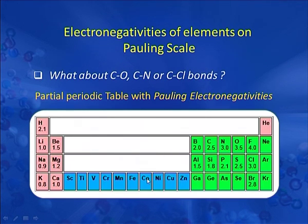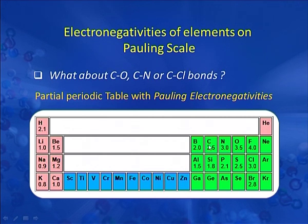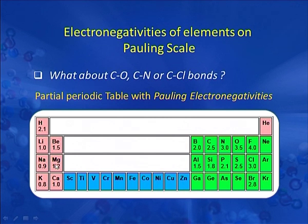A partial periodic table with falling electronegativity shows that metals have electronegativity less than carbon's 2.5, while elements like nitrogen, oxygen, fluorine, and chlorine have electronegativity greater than carbon. Any element attached to carbon with electronegativity greater than 2.5 makes carbon slightly positive in that bond. When carbon is attached to metals like lithium, sodium, potassium, or magnesium — which are more electropositive than carbon — carbon acquires a negative charge.